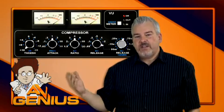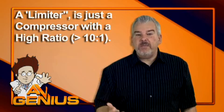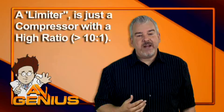And some compressors even have ratios that are 100 to 1 or infinity to 1. DBX even has a peak stop plus. This stops anything from exceeding whatever the threshold level is. It's really called limiting. A limiter is just a compressor with a really high ratio.